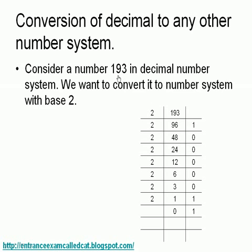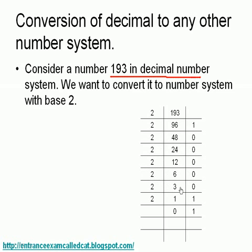Consider the number 193 in the decimal number system. We want to convert it to base 2. Continuously divide 193 by 2 until the quotient reaches 0, recording the remainders each time. 193 ÷ 2 = 96 remainder 1; 96 ÷ 2 = 48 remainder 0; 48 ÷ 2 = 24 remainder 0; 24 ÷ 2 = 12 remainder 0; 12 ÷ 2 = 6 remainder 0; 6 ÷ 2 = 3 remainder 0; 3 ÷ 2 = 1 remainder 1.